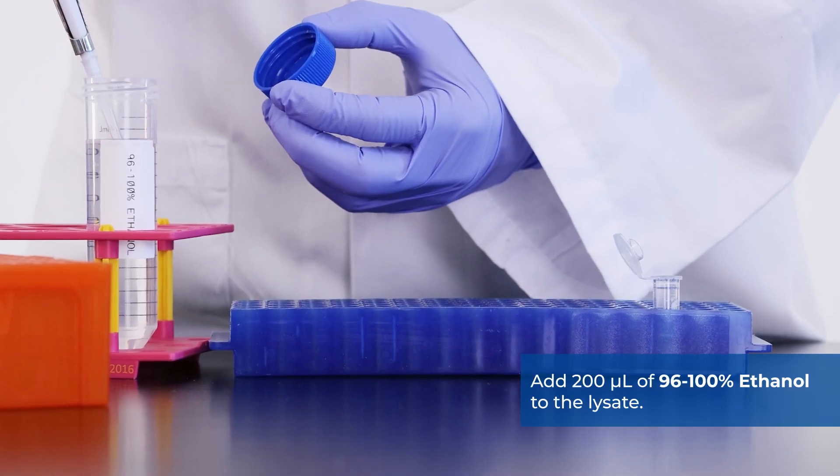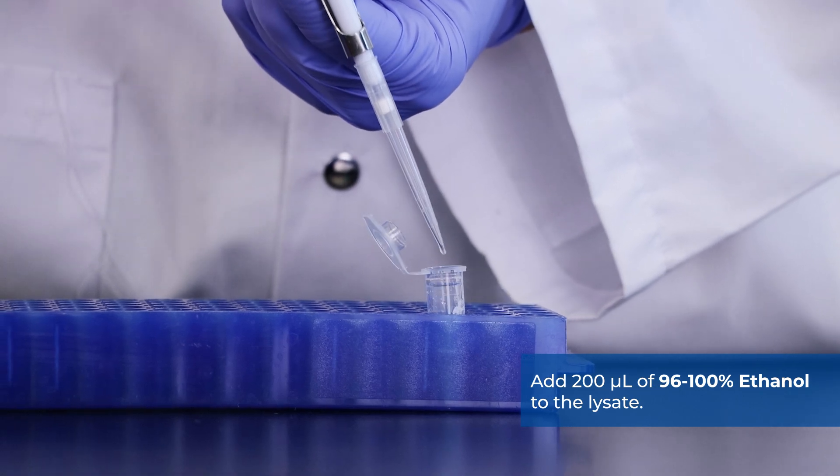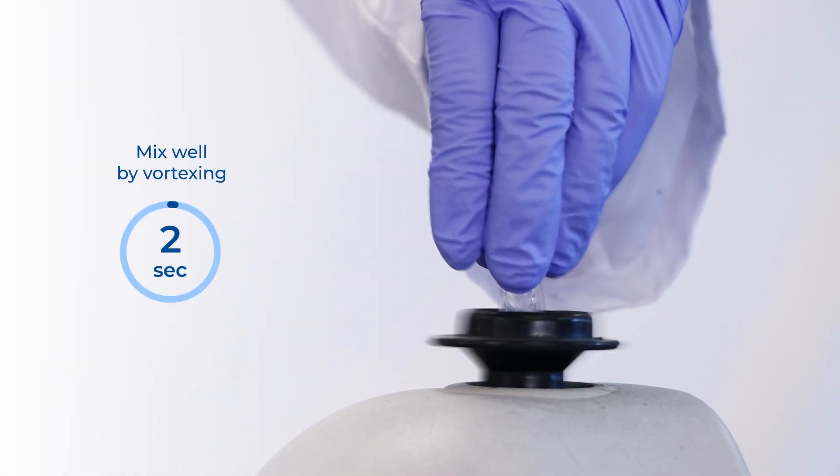Add 200 microliters of 96-100% ethanol to the lysate. Mix by vortexing for 10 seconds.